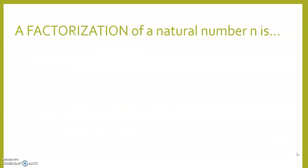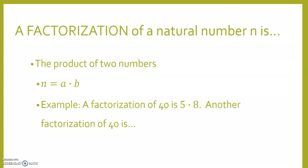A factorization of a natural number n is the product of two numbers where n equals a times b. A factorization of 40 is 5 times 8. Another factorization of 40 is 2 times 20 or 4 times 10.